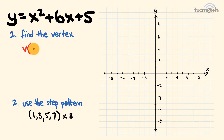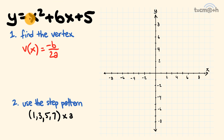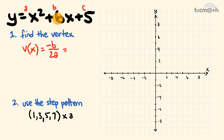We want the x-coordinate first. The vertex x-coordinate is equal to negative b over 2a. Looking at our original equation, consider the numbers in front of each part. We have x squared, but this is 1x squared, so a is equal to 1. The number in front of x is the b value, so b is equal to 6. And finally we have c, which is 5. We'll get back to this because it's a pretty handy value.